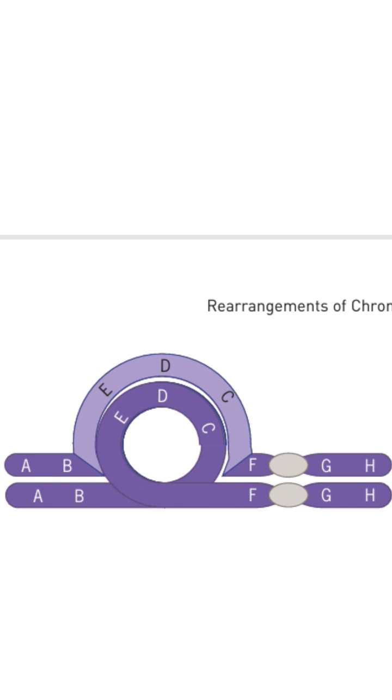As we can see in this figure, the inverted chromosome forms a loop and the non-inverted chromosome aligns around it. This can lead to crossing over problems, resulting in missing or duplicated gene regions in the gametes.